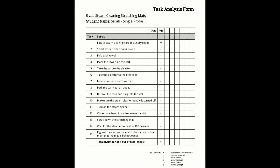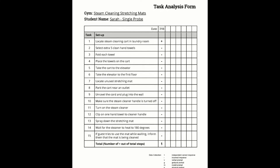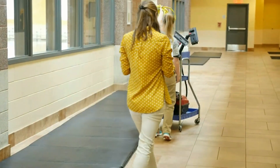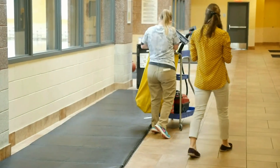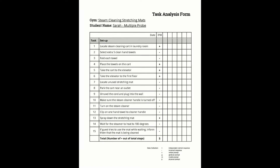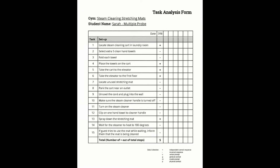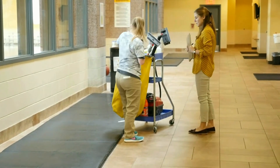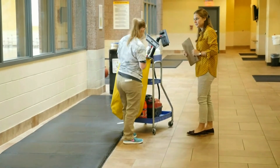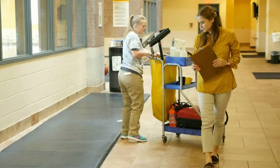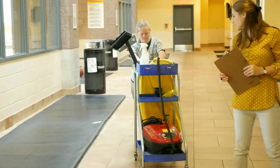The value of a single opportunity probe is that it reveals to an instructor where instruction needs to begin. A multiple opportunity probe is conducted similarly, but can provide more specific information. When a student makes an error or does not initiate a task on her own, place a minus sign next to that step. Instead of ending the probe like you would with a single opportunity probe, move the student to the next step and give her three to five seconds again to see if she can correctly complete the task.